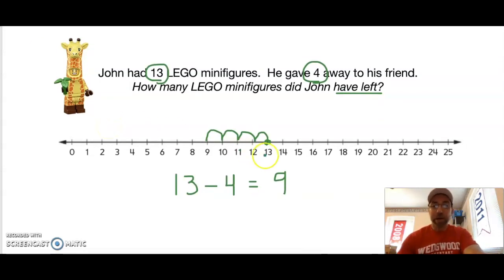Let's see how you did. I started at 13 on my number line since that was my greater number, and because he gave 4 LEGO minifigures away, that means his answer is getting smaller. One, two, three, four, and I landed on 9. 13 minus 4 equals 9 minifigures left. Did you get that one right too? Thumbs up! Awesome job!